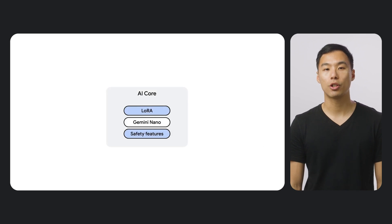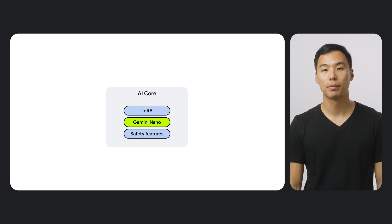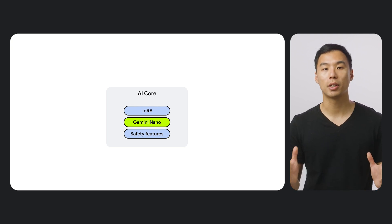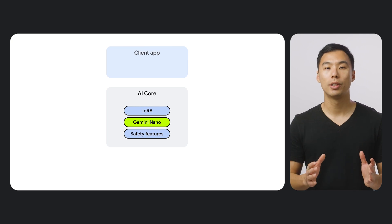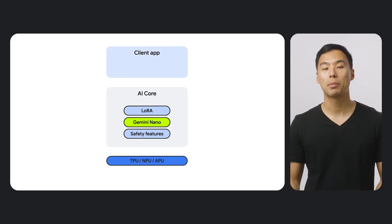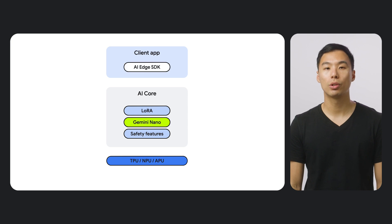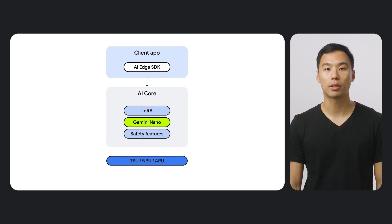Now let's take a closer look at Gemini Nano, powered on Android by the system service AI Core. Gemini Nano is the smallest of Google's powerful Gemini family of models, and it is Android's model of choice for on-device inference. AI Core handles all interactions between the app, the Gemini Nano model, and hardware accelerators on behalf of each app. As a result, apps only need to call the Google AI Edge SDK and run their Gen AI workloads without having to worry about maintaining or updating their own models.